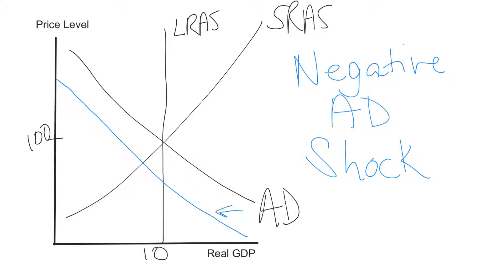Aggregate demand has decreased, shifting to the left. Starting from long-run equilibrium at point A, after the negative aggregate demand shock we end up at point B — a short-run equilibrium. Long-run equilibrium is where aggregate demand and short-run aggregate supply are equal on top of the long-run aggregate supply curve. Short-run equilibrium is where they're just equal to each other but either to the left or right of the long-run aggregate supply curve.